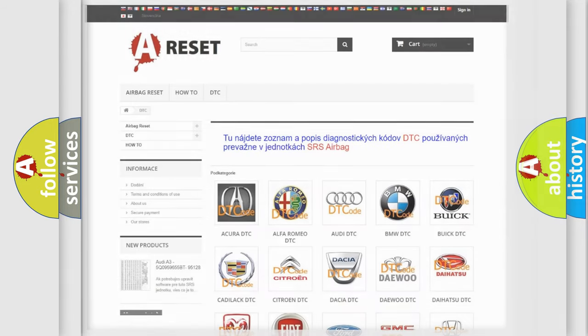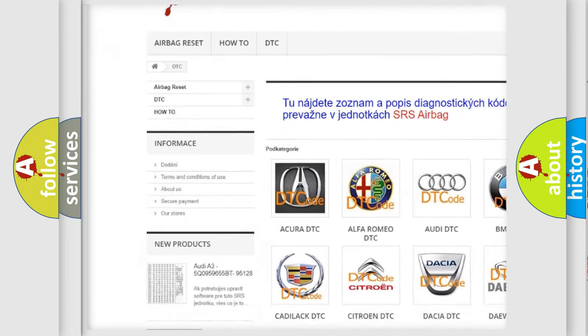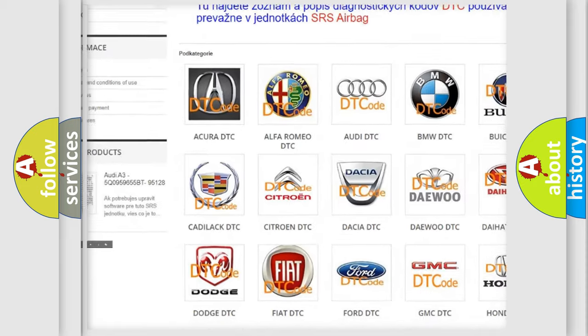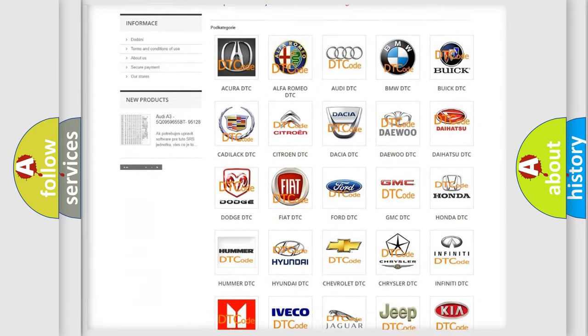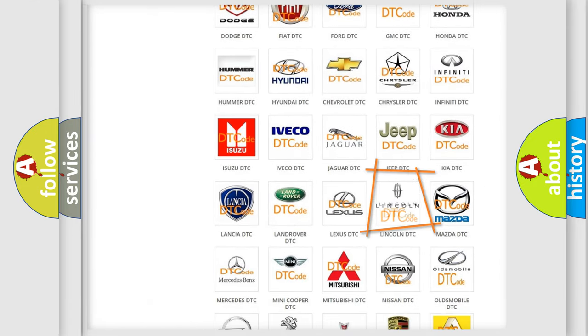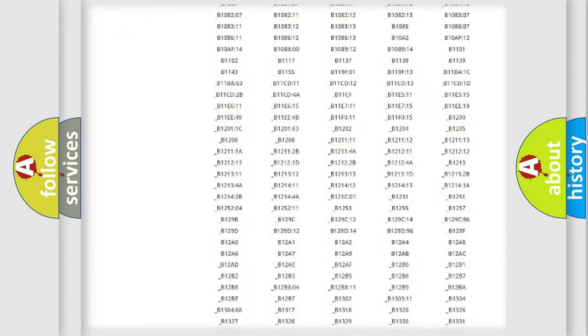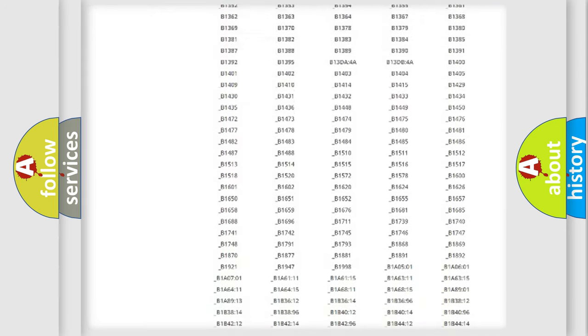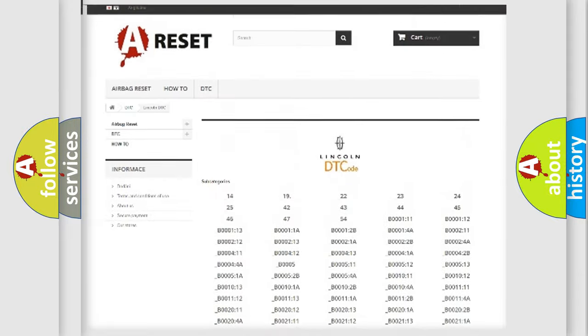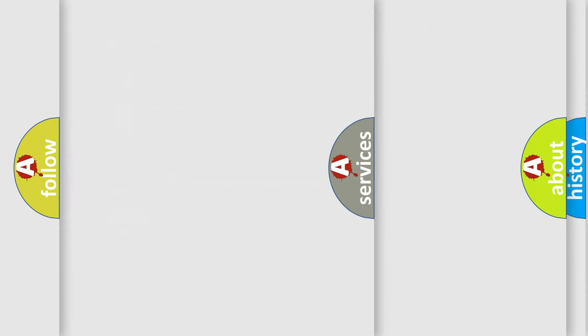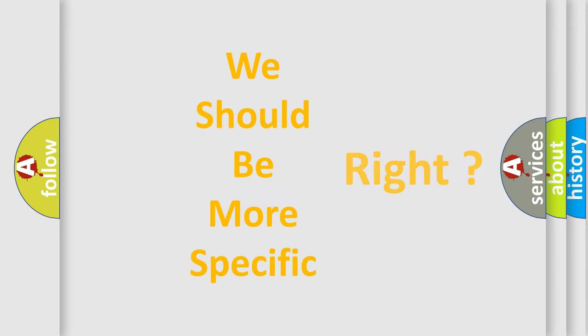Our website airbagreset.sk produces useful videos for you. You do not have to go through the OBD2 protocol anymore to know how to troubleshoot any car breakdown. You will find all the diagnostic codes that can be diagnosed in vehicles. Also many other useful things. The following demonstration will help you look into the world of software for car control units.